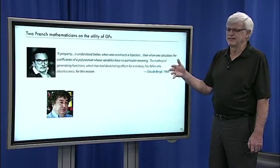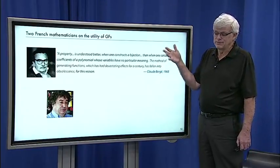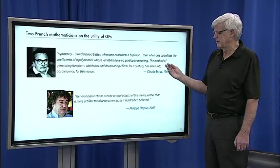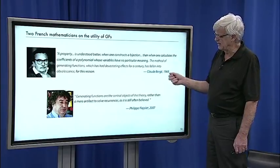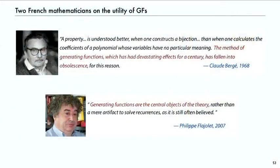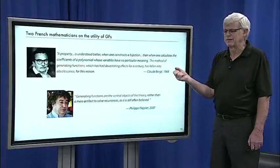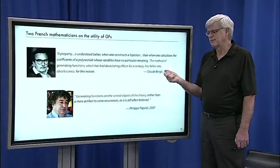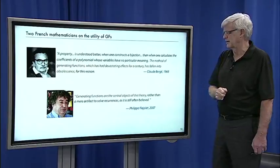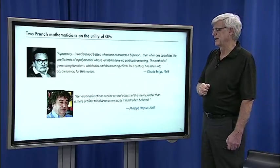But what Philippe came to understand, despite this attitude which was prevailing in many circles when he was a student, Philippe came to understand in the 80s and 90s that generating functions really are the central objects of the theory of analytic combinatorics. They're not a mere artifact to solve recurrences as many people believe. They're the central object. We can get generating functions from the symbolic method and then we can use generating functions to get coefficient asymptotics.